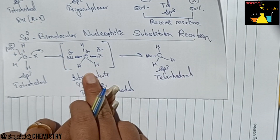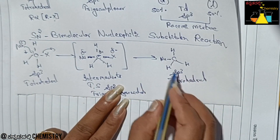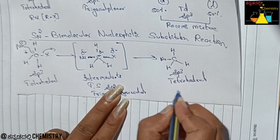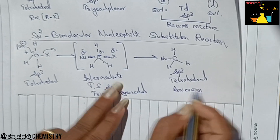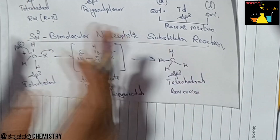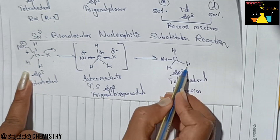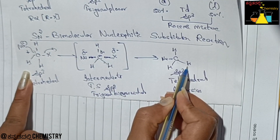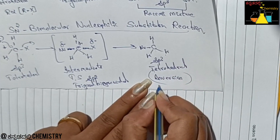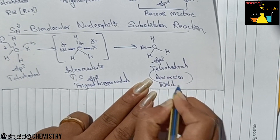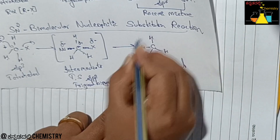This is the carbocation formation analogy. The product is an inversion product — the ULTA (flipped) product from the back side. This is the Walden Inversion product. SN2 gives a complete 100% inversion product.